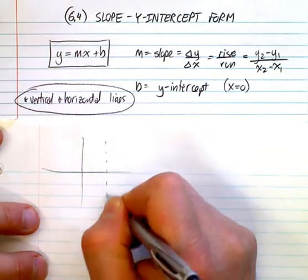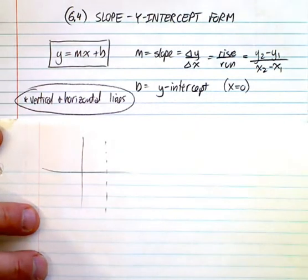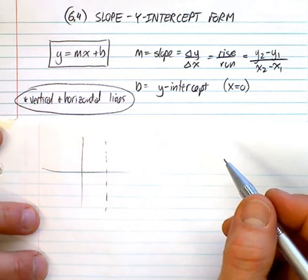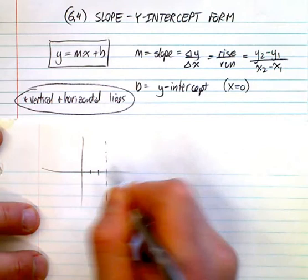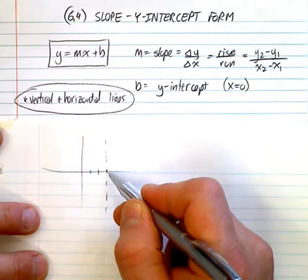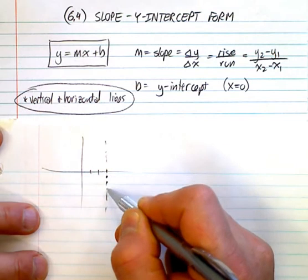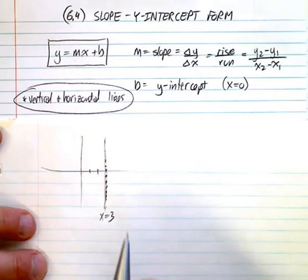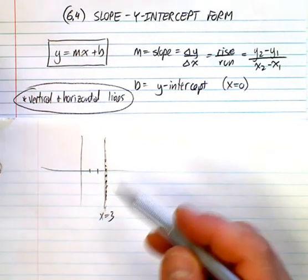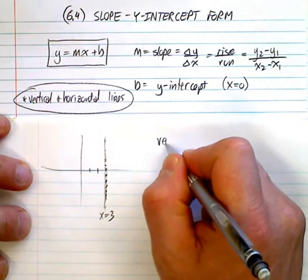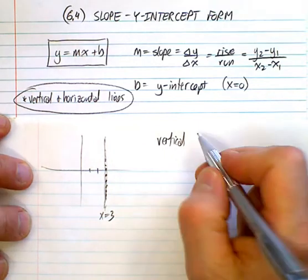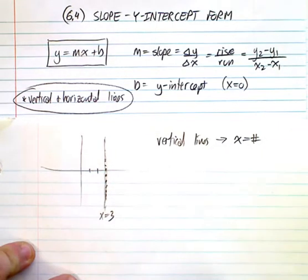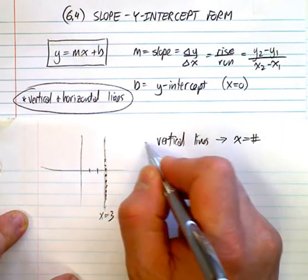Vertical lines have a very simple equation. If you look at this, this line happens at x equals 3. What's the value of x here, or here, or here? All along this line you have x equaling 3. What you don't have is a specific y-value because y can be anything. So for vertical lines, they're always in the form x equals a number because x is constant all the way through. But these are not functions — vertical lines are not functions.